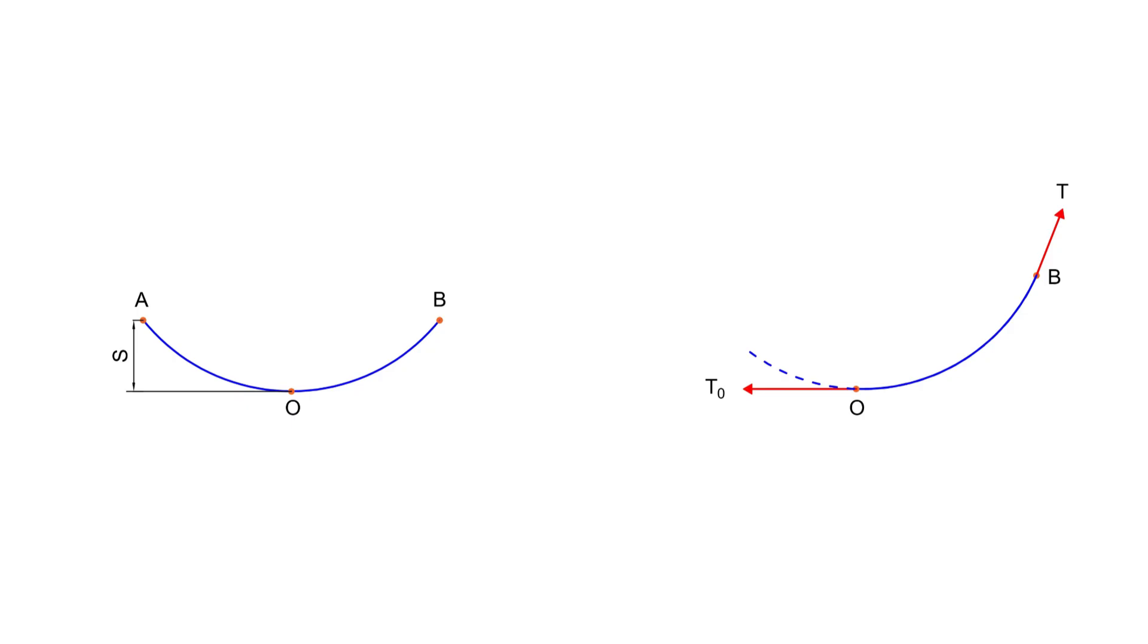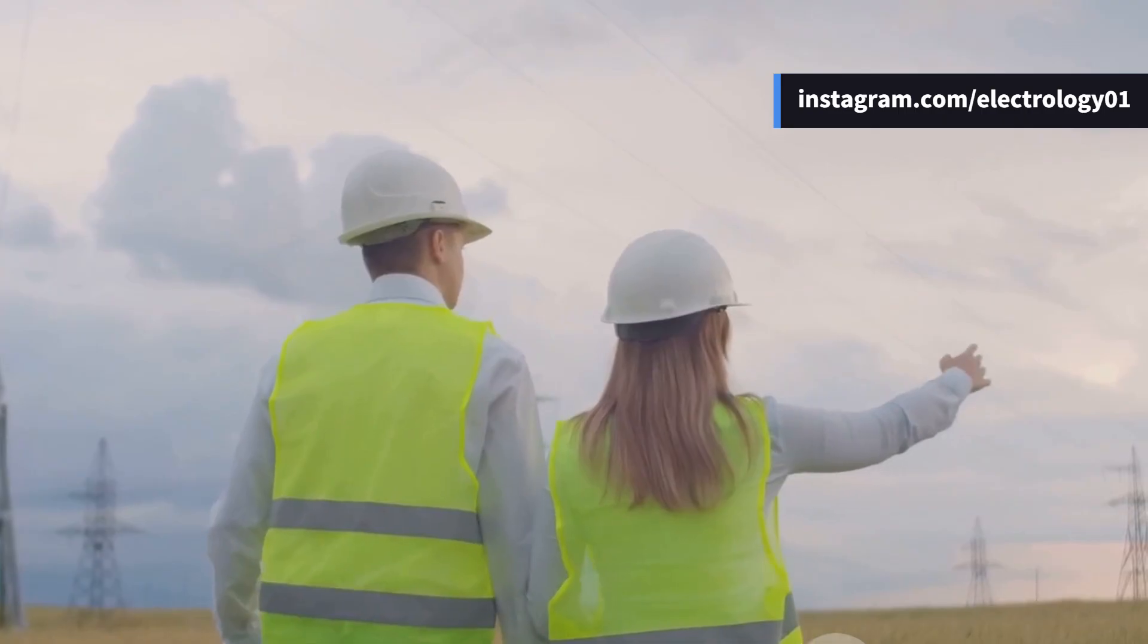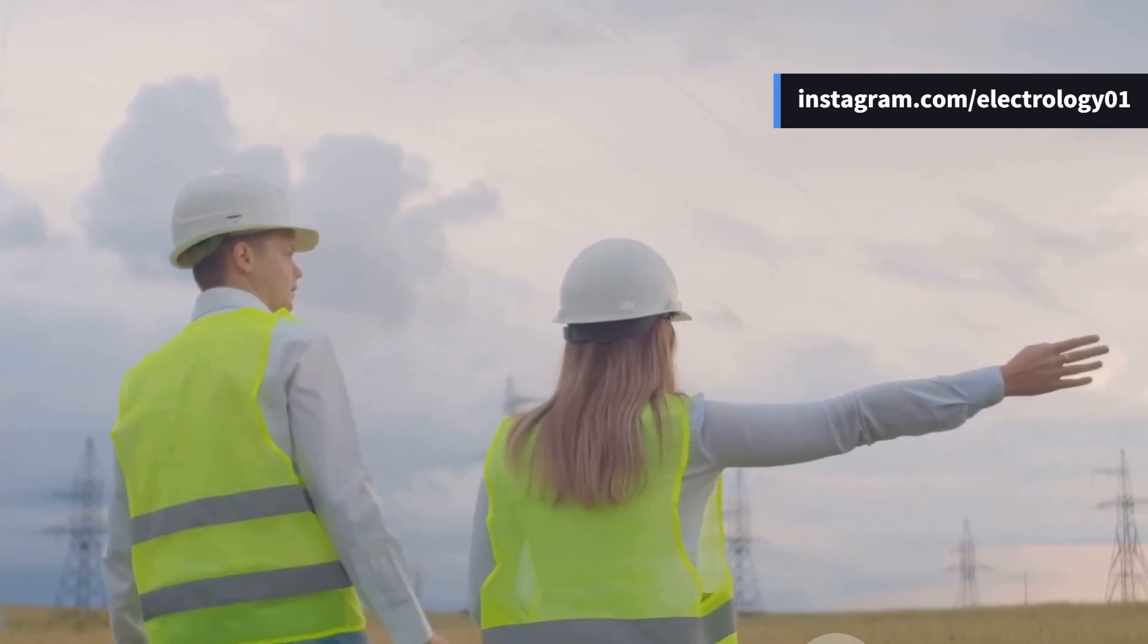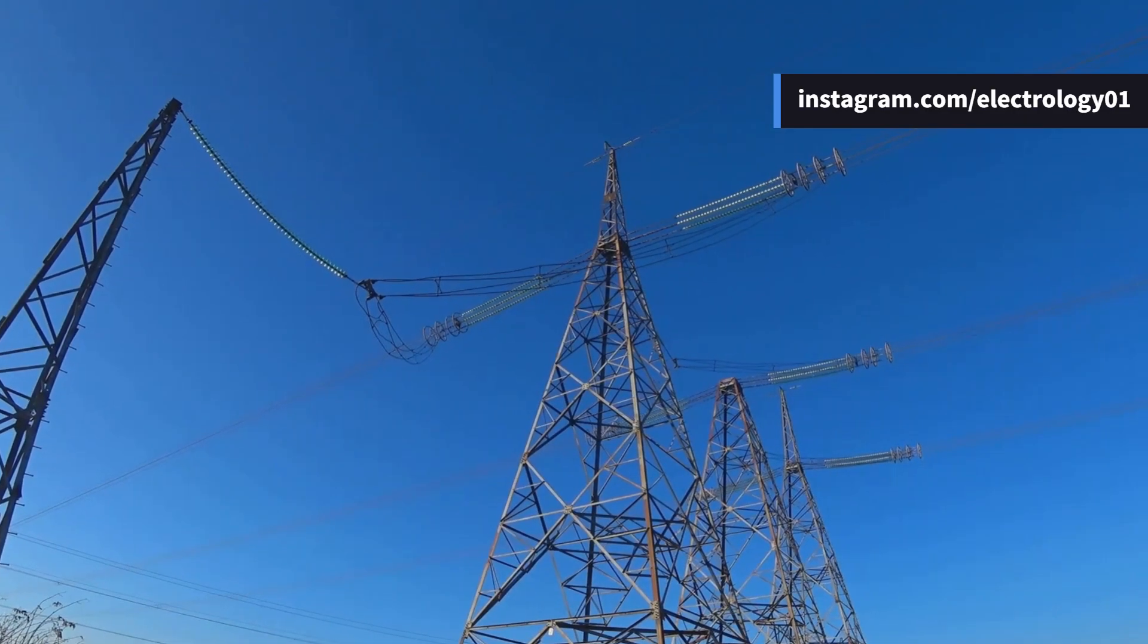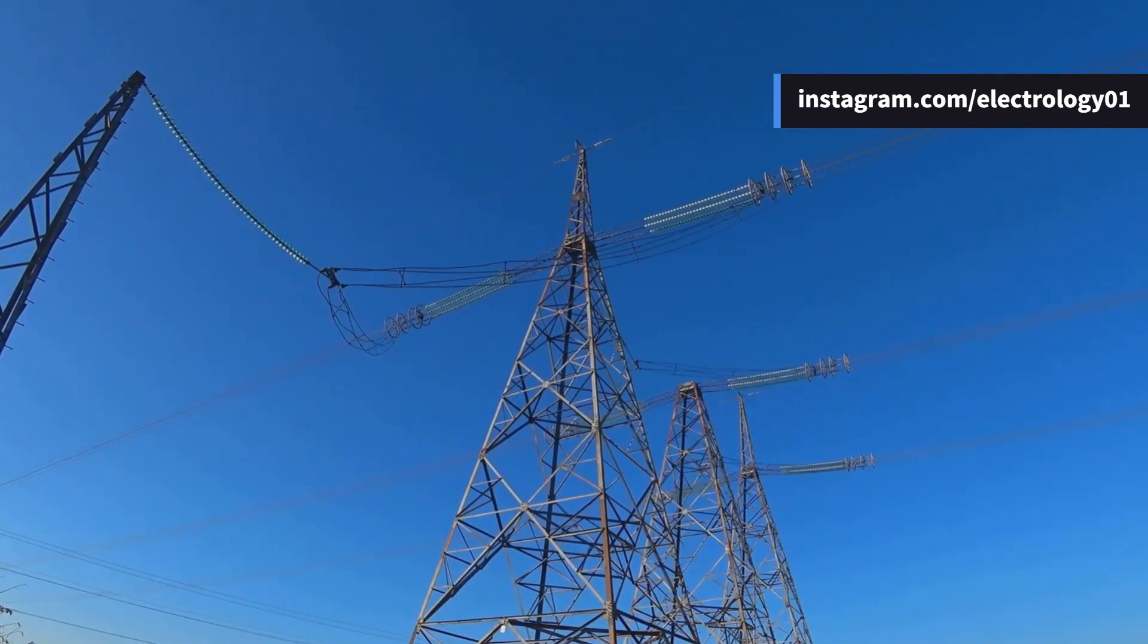Here's the catch: if sag is small, the wire is tight which means tension is high and there is a risk of snapping. If sag is large, the wire is loose, tension is low, but poles need to be very tall. So in practice, engineers make a compromise between minimum sag and safe tension. By the way, do you think sag should be more in longer spans or shorter spans? Drop your guess in the comments.